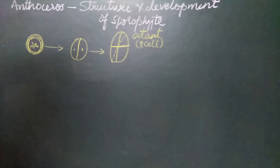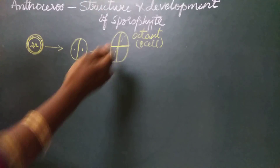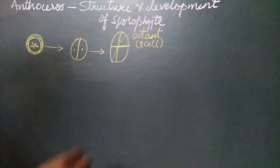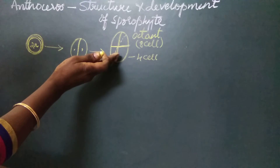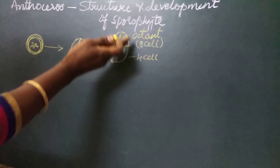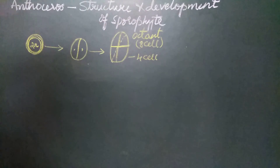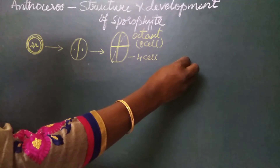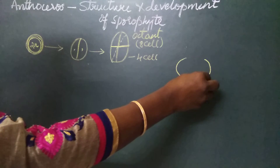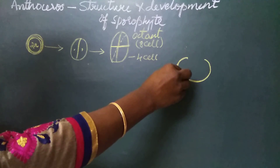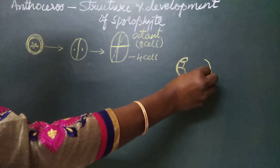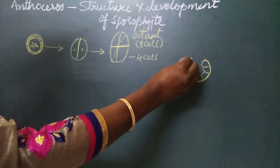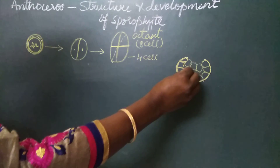These cells may be equal in size, or in certain cases the lower cells are smaller than the upper four cells. The eight cells are arranged in two tiers — lower four cells and upper four cells. The lower four cells divide in all planes to form a massive foot, which is bulbous in nature, with elongated palisade-like cells towards the outside and vacuolated parenchyma in the center of the foot region.